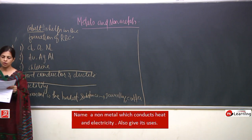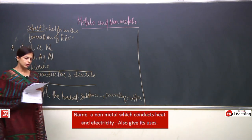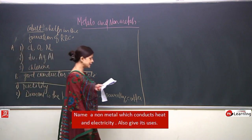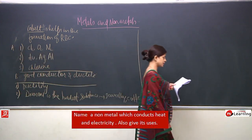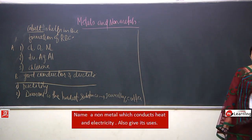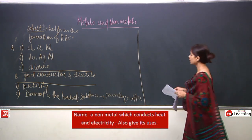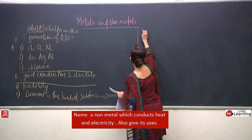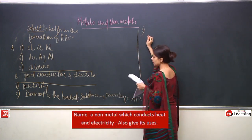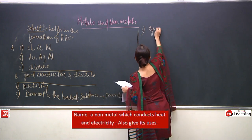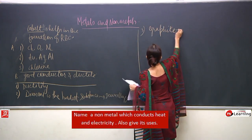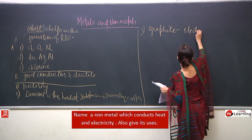Name a non-metal which conducts heat and electricity — it is graphite. Graphite is used as electrodes.